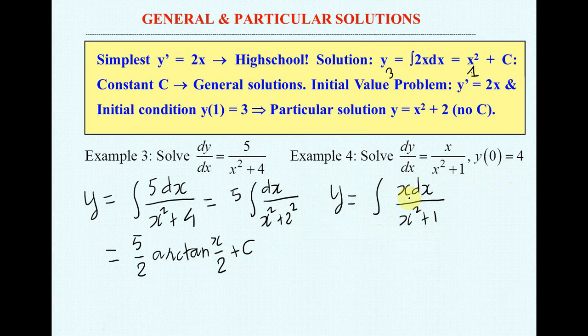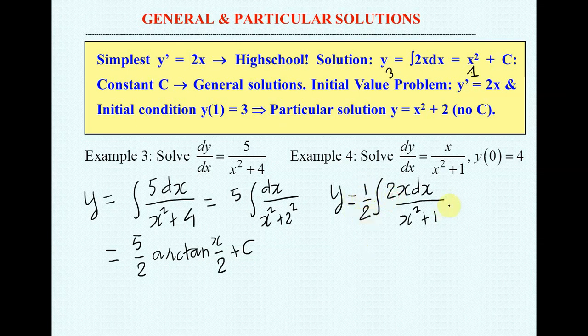You don't have table, you must use the basic technique. You recognize that derivative of x² plus 1 equals 2x. So you must put 2 above and divide 2 outside.